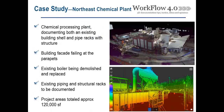The case study was a chemical processing plant with a series of different scopes of work under the same contract. One was to document an existing building shell — originally an early 1920s building that has evolved over the years, as manufacturing plants tend to do. They were also looking to document a series of pipe racks and structure along the site because they were doing a complete boiler replacement. Some of the site was being demolished, other pieces were going to remain, so they needed to know what was there to accommodate new additions to the piping and structure.